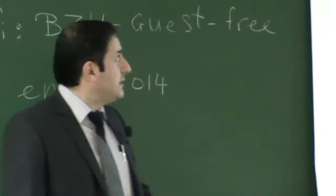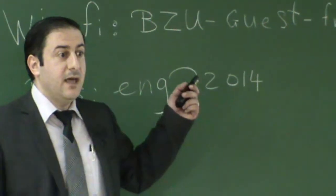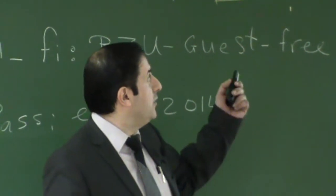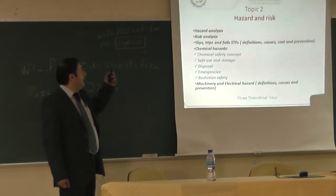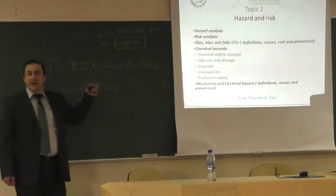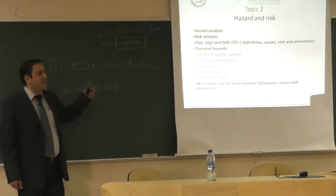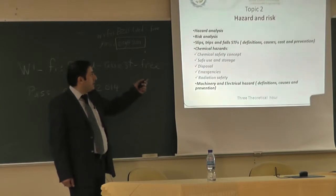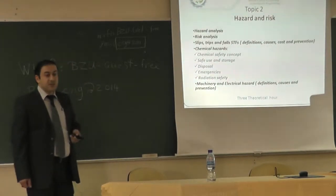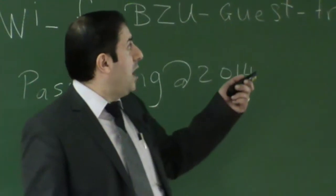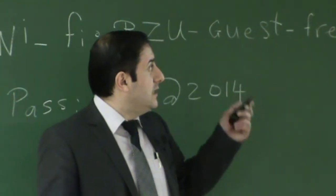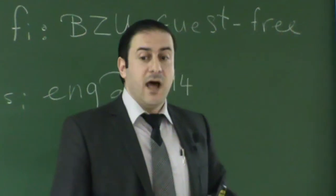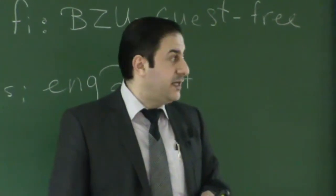Topic two covers hazard and risk. We will perform hazard analysis, define hazard, and show trainees how to conduct it. Then we will discuss risk analysis and the hazards workers may face in the workplace, such as slips, trips, and falls — covering their definition, causes, cost, and prevention. We will also talk about chemical hazards: chemical safety concepts, safe use and storage of chemicals, how to separate different chemicals — which can be determined from the Material Safety Data Sheet.